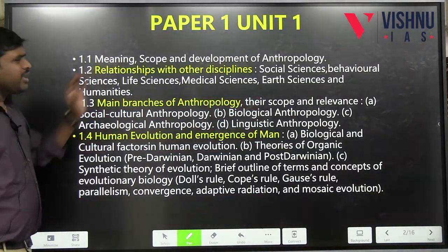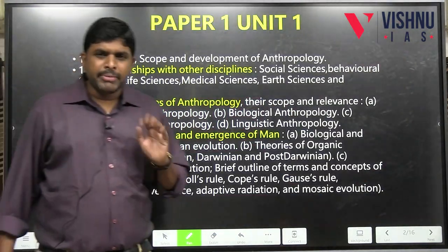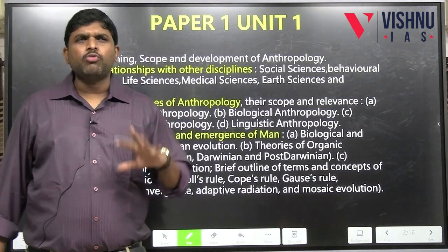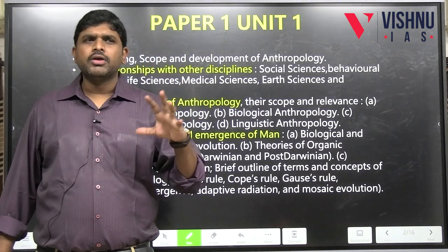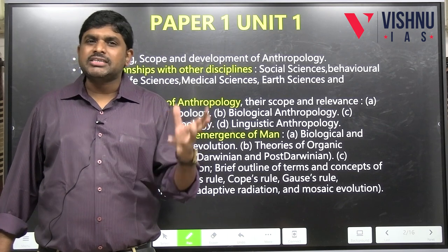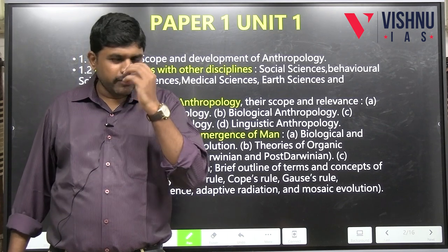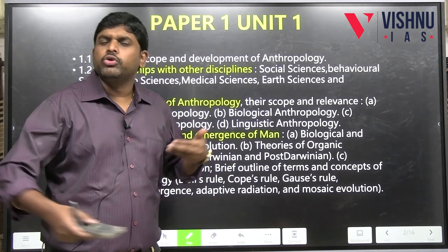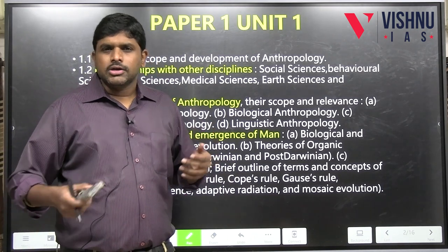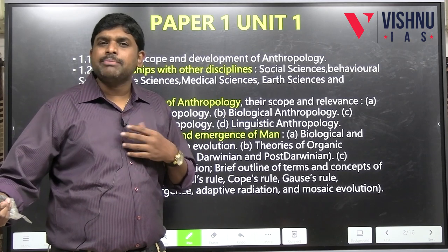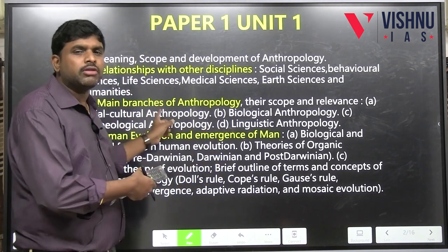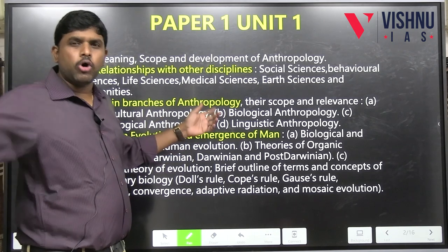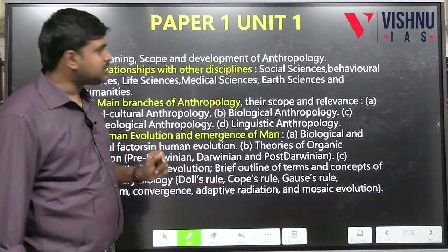The first unit covers the meaning, scope, and development of anthropology — what is its meaning, scope, and nature. We won't start from Unit 1 directly; instead, after completing the major part of anthropology, we'll come back to 1.1 so you can better explain what anthropology is, its scope, and its nature.